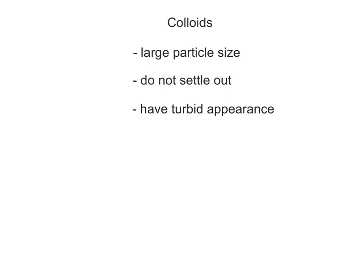The second type of mixture found in the body is called a colloid. Colloids are mixtures of large solute particles distributed within some type of solid, liquid, or gas dispersing agent. All colloids share the following properties. They have a large particle size. Their solute particles do not settle out over time with gravity and cannot be separated by filters. And they have a turbid or cloudy appearance as they scatter light.